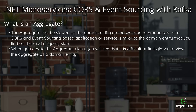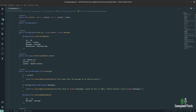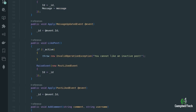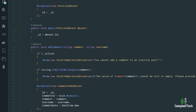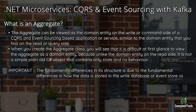Now, when you create your aggregate class, you will see that it is difficult at first glance to view the aggregate as a domain entity, because unlike the domain entity on the read side, it is not a simple plain old C-Sharp object that contains only state and no behavior. The important thing to understand is that the fundamental differences in its structure is due to the fundamental difference in how the data is stored in the write database or event store versus how it is stored in the read database.